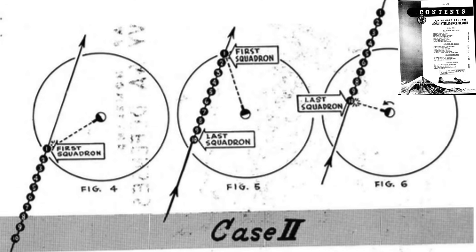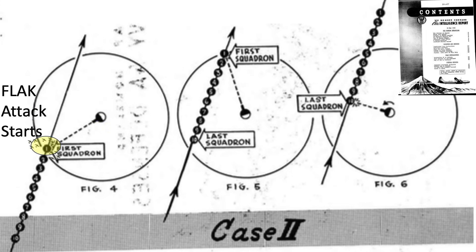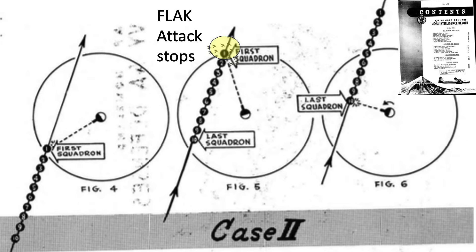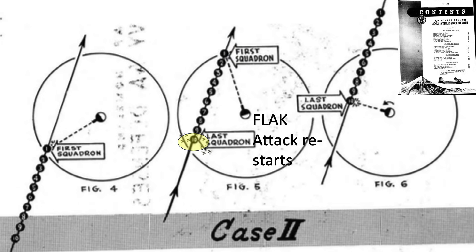In Case 2, the trail distance for the ten formations is reduced from 15 miles to 1 mile. A very different outcome can be expected. The first group comes under flak fire like in Case 1, and the guns maintain targeting on Group 1, ignoring the trailing squadrons. Once Group 1 egresses beyond the gun's effective range, the flak guns stop firing and reposition themselves to attack Group 10, until it is beyond the gun's effective range. Only squadrons 1 and 10 will be fired upon.